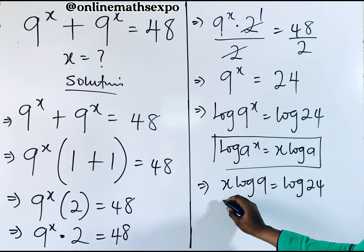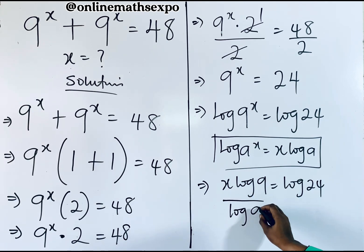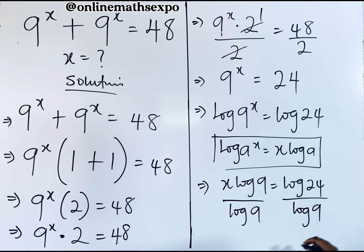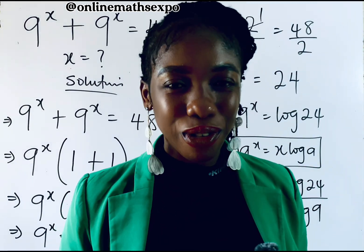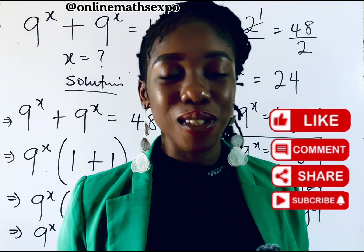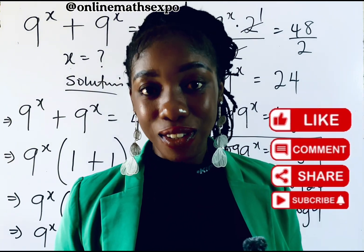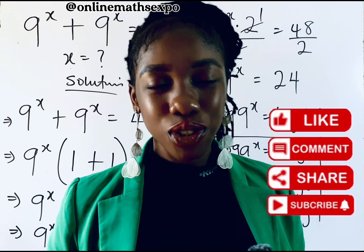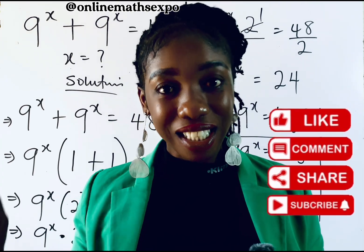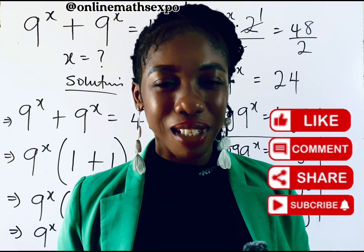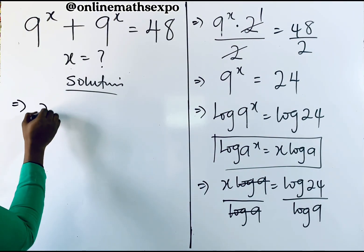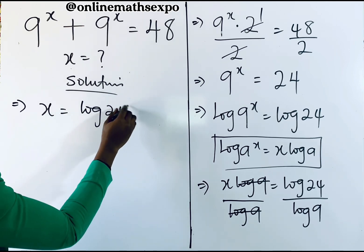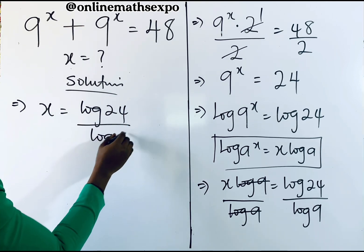Now to get x, divide both sides by log 9. This gives us x is equal to log of 24 divided by log of 9.